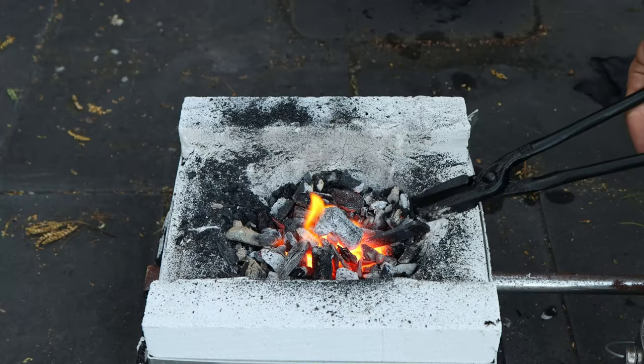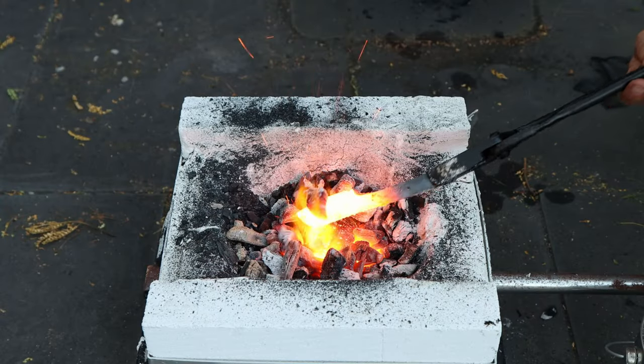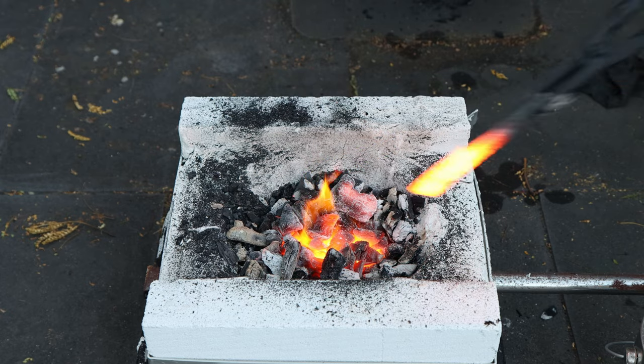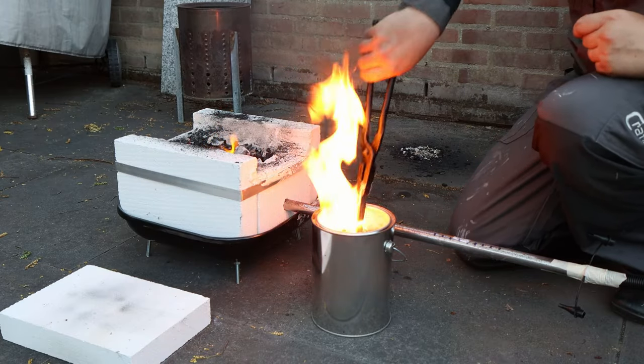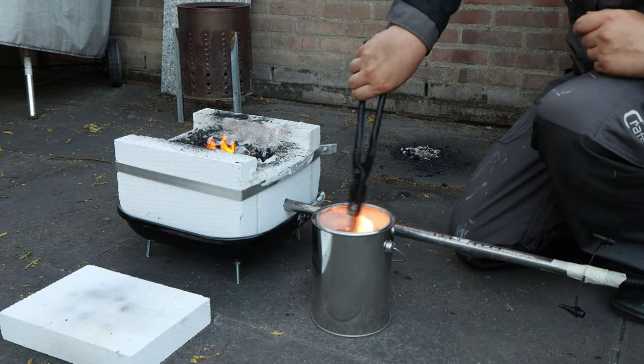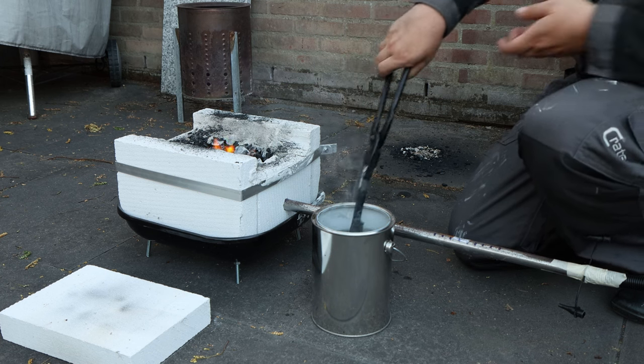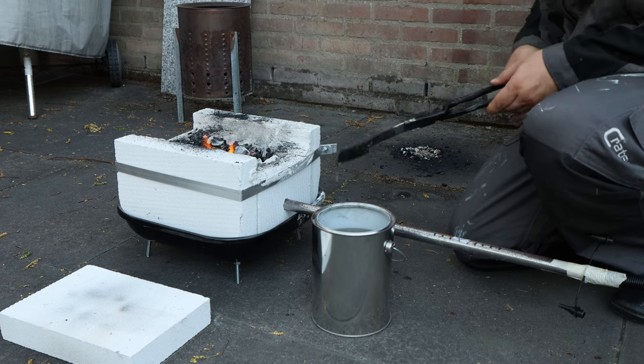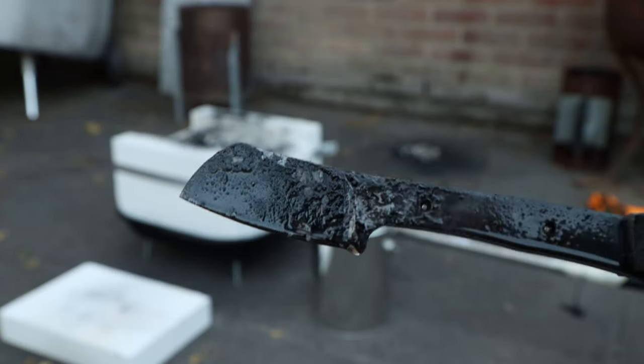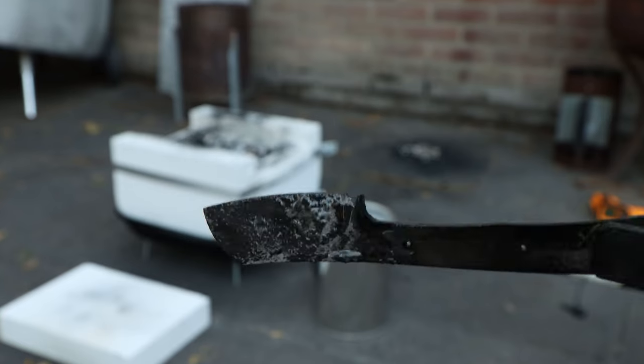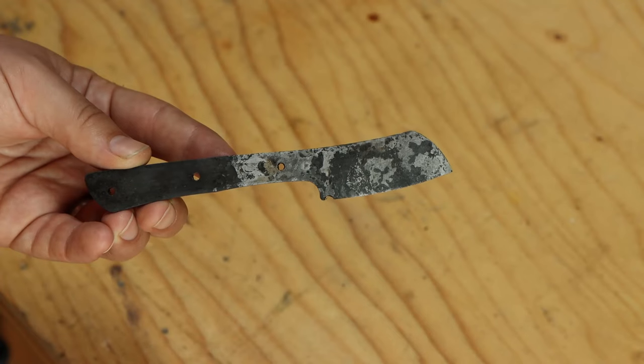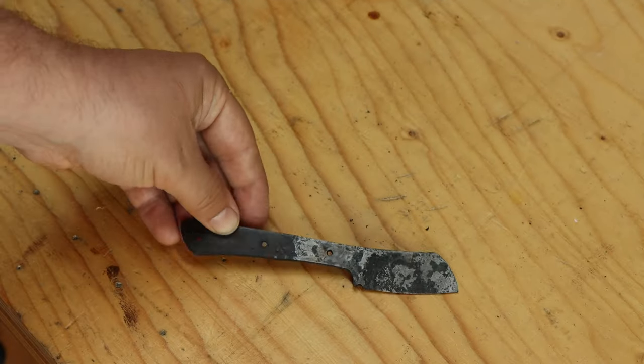When the blade is at the correct temperature, I quench it in warmed up vegetable oil. On video the steel looks too hot, but I'm doing this at dawn to better judge the color of the hot steel. The camera adjusted its settings and as a result the steel looks much hotter. After quenching, I let it totally cool down and clean off the oil.